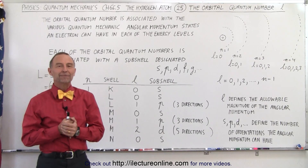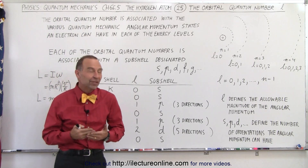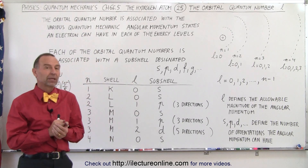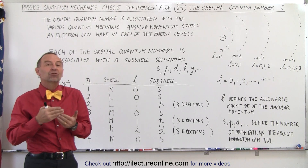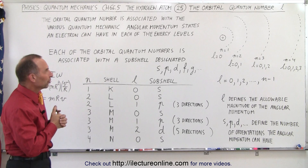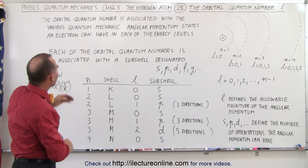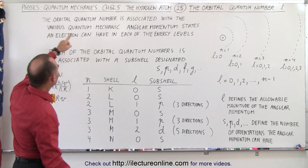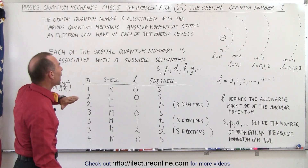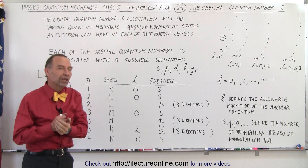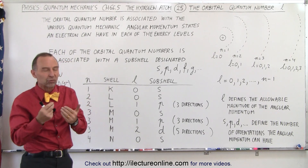Welcome to ElectronLine. Let's take a look at our second quantum number for the hydrogen atom — it's called the orbital quantum number. For each energy level, there is a certain number of possible orbital quantum numbers. The orbital quantum number is defined as being associated with the various quantum mechanical angular momentum states an electron can have in each of the energy levels. So the orbital quantum number is associated with the angular momentum of the electron.